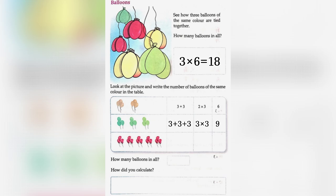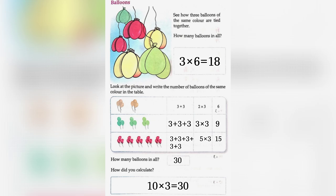In the third picture, the balloons are red in color and there are 5 sets. So, 3 plus 3 plus 3 plus 3 plus 3 equals 5 into 3 is equal to 15. How many balloons in all? 30. There are 10 sets of balloons with 3 in each set, so 10 into 3 is equal to 30.